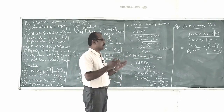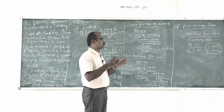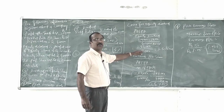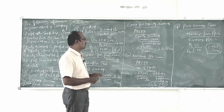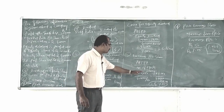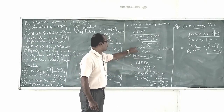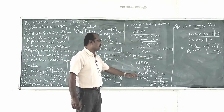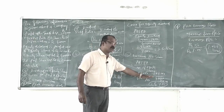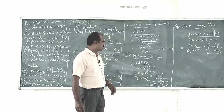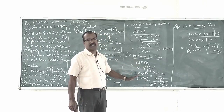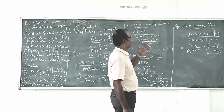The next ratio to be calculated is earnings per equity share: profit after tax and preference dividend divided by number of equity shares. Profit after tax and preference dividend is Rs. 2,82,000. Number of equity shares: Rs. 4 lakh equity capital divided by Rs. 10 per share gives 40,000 equity shares. So 2,82,000 divided by 40,000 shares gives us Rs. 7.05 — that is the earnings per share.